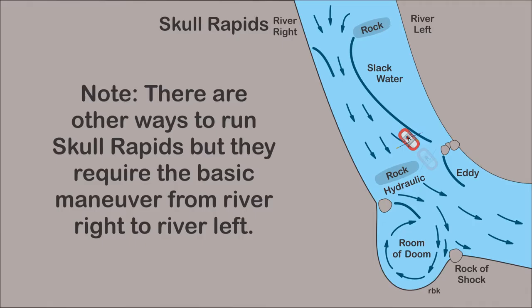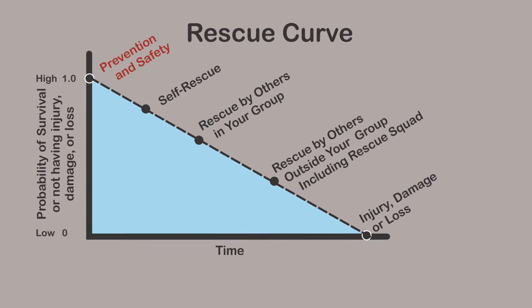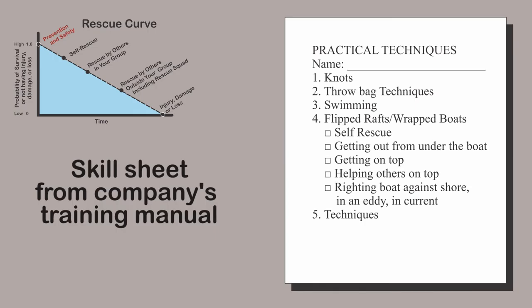It also avoids recirculating in the room of doom. The rescue curve can be used to frame the incident. The first line of defense is safety and prevention. In the company's training manual, they include the practical techniques of knot tying, throw bag technique, swimming, flipped rafts in wrapped boats, and miscellaneous techniques.